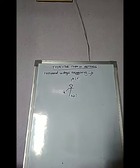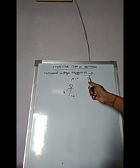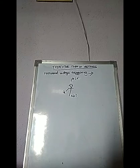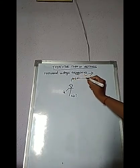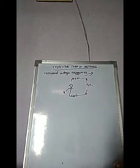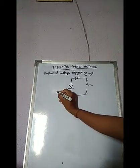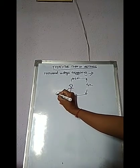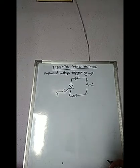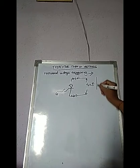To turn on the thyristor we need to follow some techniques. The first one is the forward voltage triggering technique. In forward voltage triggering, when the anode to cathode forward voltage is increased with the gate circuit open, the reverse bias junction J2 will break.